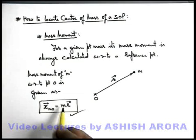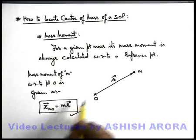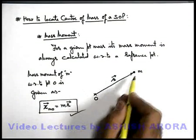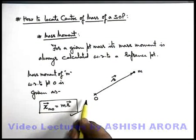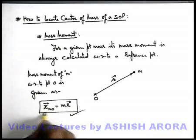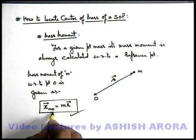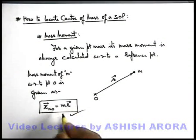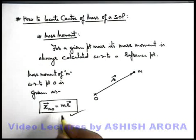Mass moment is denoted by the product of mass and the position vector with respect to the point from which mass moment is calculated. Always remember, mass moment is a vector quantity. Now we'll see how mass moment is used in localization of centre of mass of a system of particles.